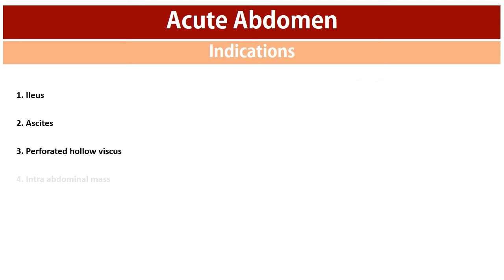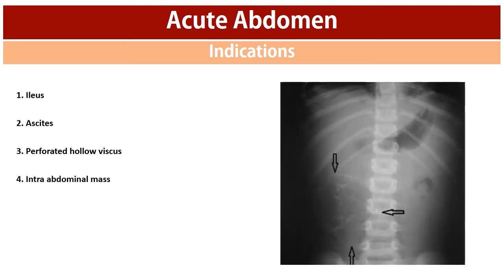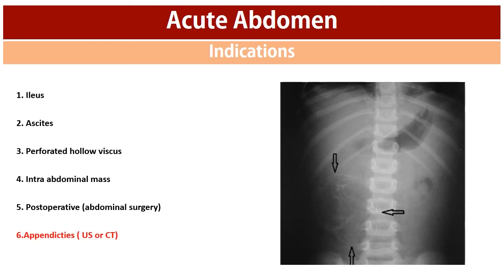Other indications include intra-abdominal masses and evaluation after abdominal surgeries. Appendicitis is the most common indication of acute abdomen; however, plain x-ray is not an accurate way to diagnose it, so ultrasound and CT scan with contrast injection are typically ordered.